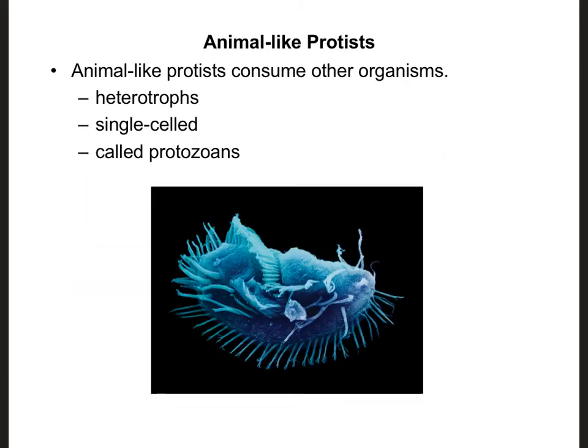The way that we classify protists is we basically compare them to the other kingdoms found in Eukarya. So we're going to have animal-like protists, plant-like protists, and fungus-like protists.